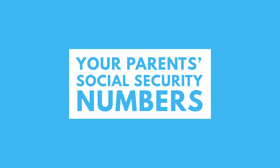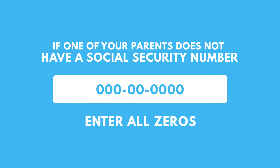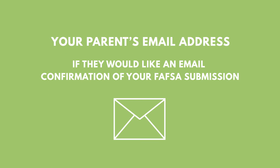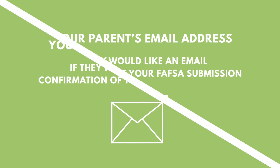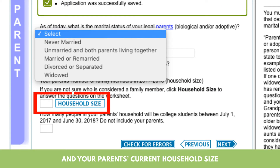Your parents' social security numbers. If one of your parents does not have a social security number, enter all zeros. Your parents' email address, if they would like an email confirmation of your FAFSA submission. The marital status of your parents as of the date you filed the FAFSA. And your parents' current household size.